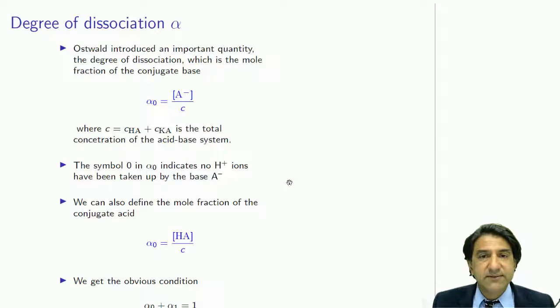It refers to a weak acid and how much of that acid dissociates. That was introduced by a guy called Ostwald, a famous guy. And it's essentially the mole fraction of the conjugate base, the amount of dissolved acid in the solution. So we have an acid HA, it dissolves into A-, the degree of dissociation, which we call alpha-0, is A- concentration on the total concentration of the A species.